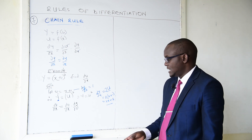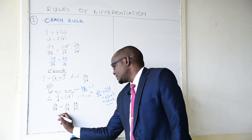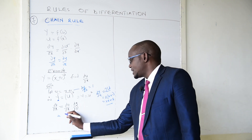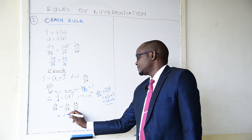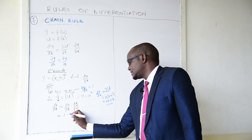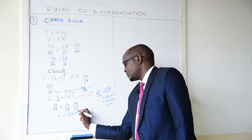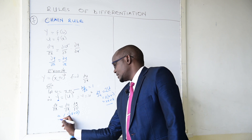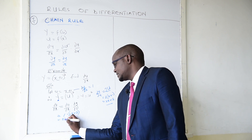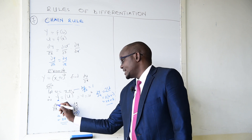Going back to replace in our equation: du/dx is 1, dy/du is 2x plus 2. Multiplying these together, our final answer for dy/dx is 2x plus 2.